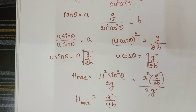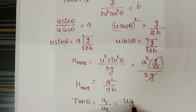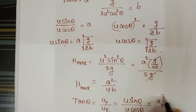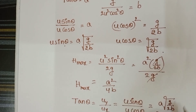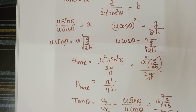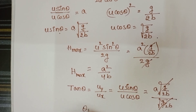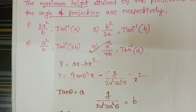Next, we find the angle of projection. tanθ = u_y / u_x = (u·sinθ)/(u·cosθ). Substituting u·sinθ = a√(g/2b) and u·cosθ = √(g/2b), the √(g/2b) terms cancel, giving θ = tan⁻¹(a). Checking the given options, the fourth option is correct.